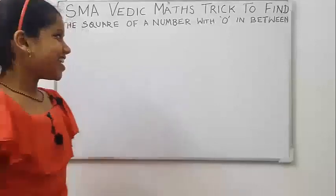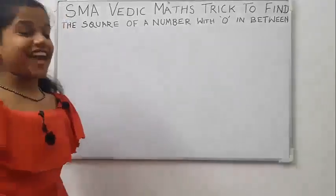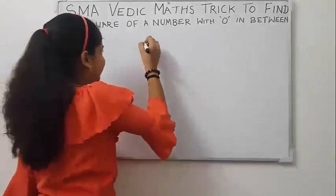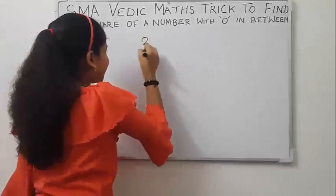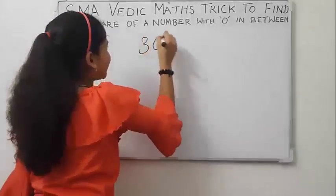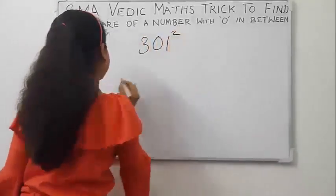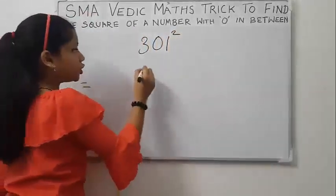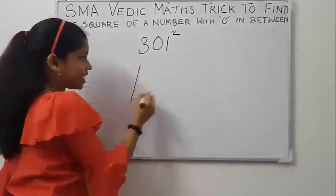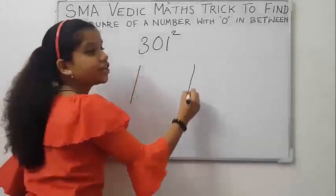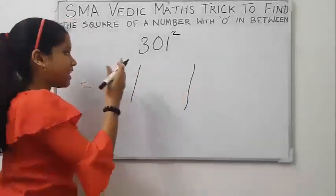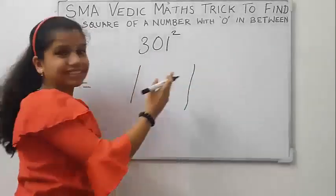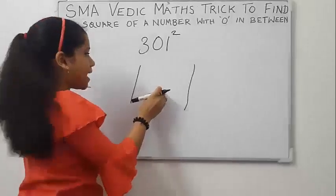First, let us take an example. Let us take 301 square. Put two partitions here to separate the left part, right part, and middle part.